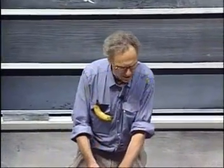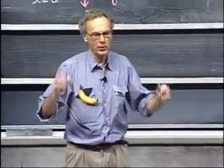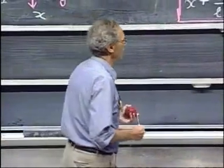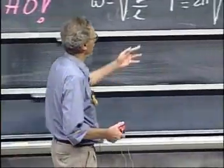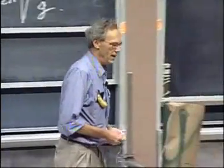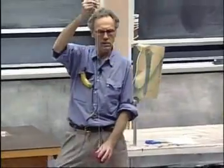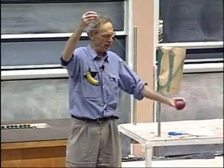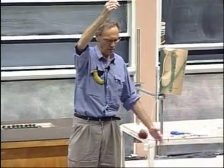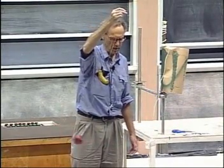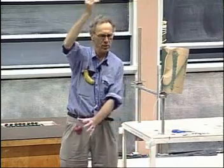To give you some rough idea of what these periods will be, substitute for l one meter. And you take for g nine point eight, you take the square root, and you multiply by two pi, and what you find is that the period is about two seconds. So a pendulum, one meter long, has a period of about two seconds. One, two, three, four, five, six. So to go from here to here is about one second.